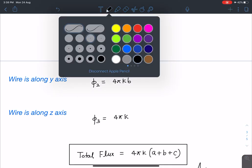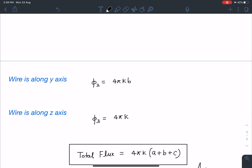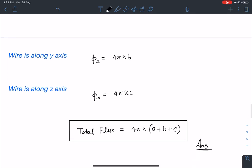So let me rectify this part. So here it will be 4 pi kc and when I am calculating the total flux I can write phi 1 plus phi 2 plus phi 3 which is going to give me 4 pi k times a plus b plus c. This is going to be the answer for this question.